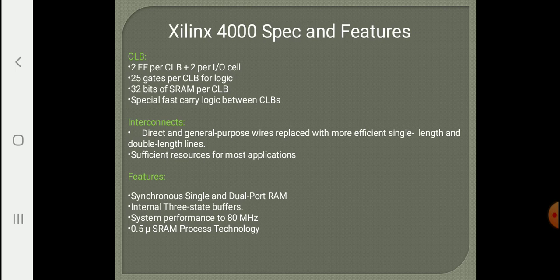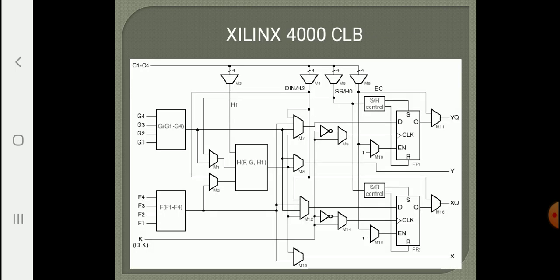Looking at the Xilinx 4000 series FPGA structure, it has two function generators G and F, and a third function generator called H. The H function generator receives three inputs: one from the G function generator, one from the F function generator, and a third from external CLBs. It has an inbuilt multiplexer that selects either the F or G function generator output. Each of the function generators F and G has four inputs — F1 to F4 and G1 to G4.